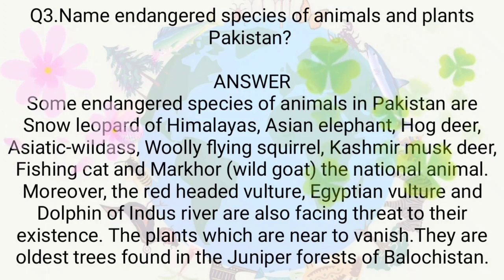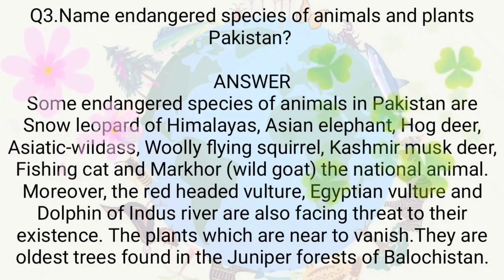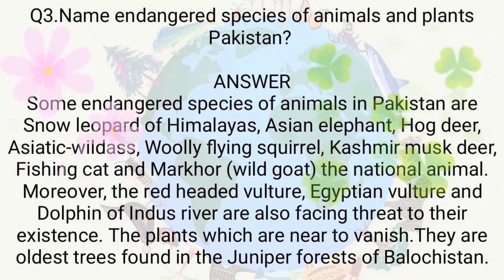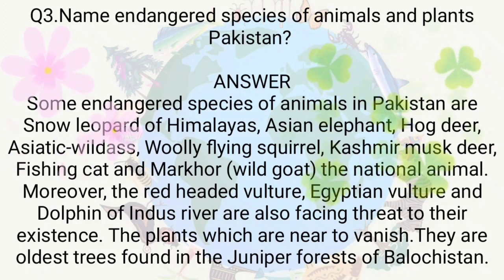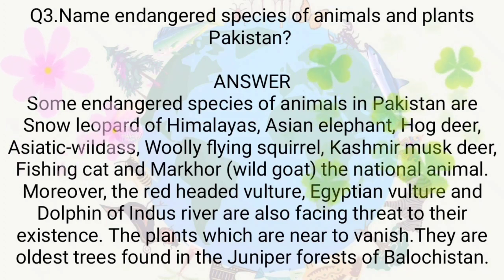Name endangered species of animals and plants in Pakistan. Some endangered species of animals in Pakistan are: Snow leopard of Himalayas, Asian elephant, hog deer, Asiatic wild ass, wooly flying squirrel, Kashmir musk deer, fishing cat, and markhor, which is a wild goat and the national animal of Pakistan. Moreover, the red-headed vulture, Egyptian vulture, and dolphin of the Indus river are also facing threat to their existence.